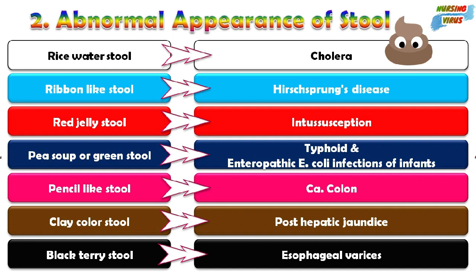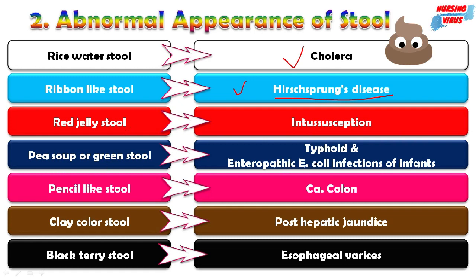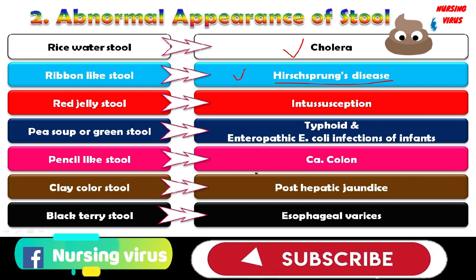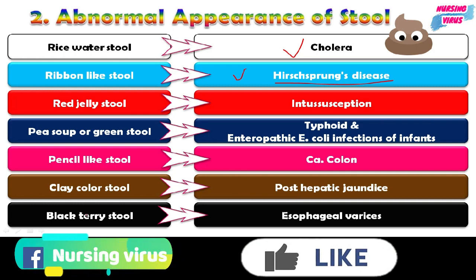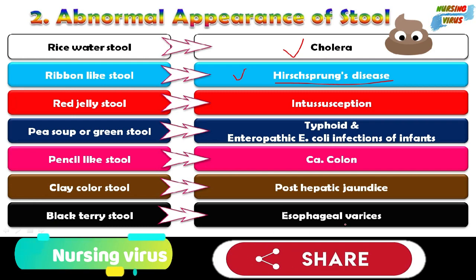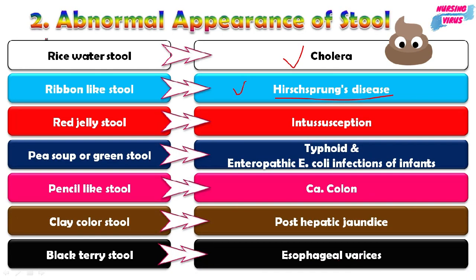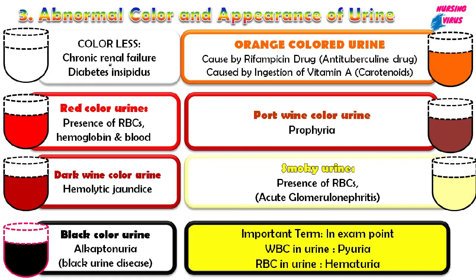The second topic is the abnormal appearance of stool. Rice watery stool indicates cholera. Ribbon-like stool indicates Hirschsprung's disease, a common disorder among children. Red jelly stool indicates intussusception. Pea soup or green stool indicates enteropathic E. coli infection in infants. Pencil-like stool can be seen in carcinoma of the colon. Clay-colored stool is seen in post-hepatic jaundice. Black tarry stools indicate esophageal varices.